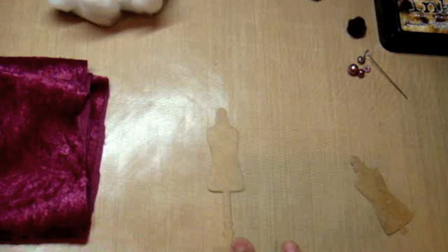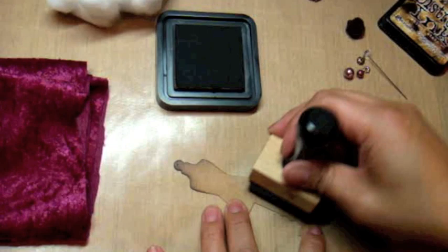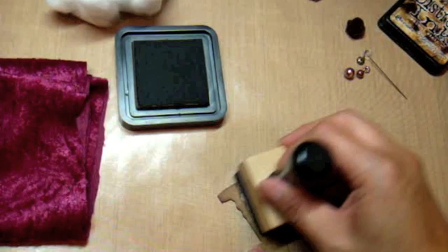With the base, I'm just going to take my Distress ink in Walnut Stain and ink up the top and the base. The center I'm not going to be too concerned about because I'm going to be layering on top the cushion that we're going to be creating.